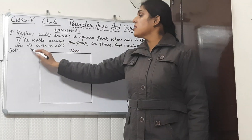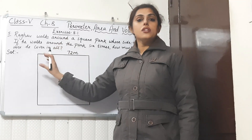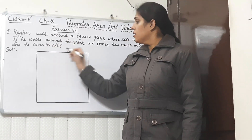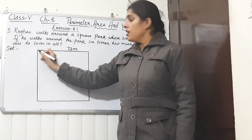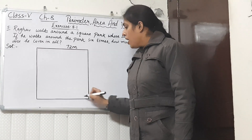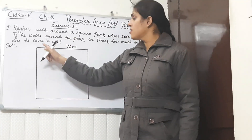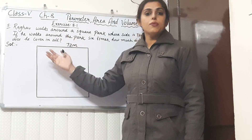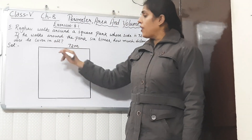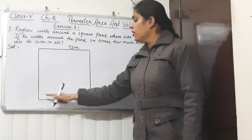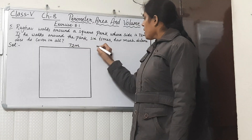We have to find how much distance he is covering. We have to find the total distance covered by him in these six rounds. Raghav is starting from this position, moving around this park, and reaching back at this position. This is the length of the boundary of the figure, and the length of the boundary of a figure is called the perimeter.